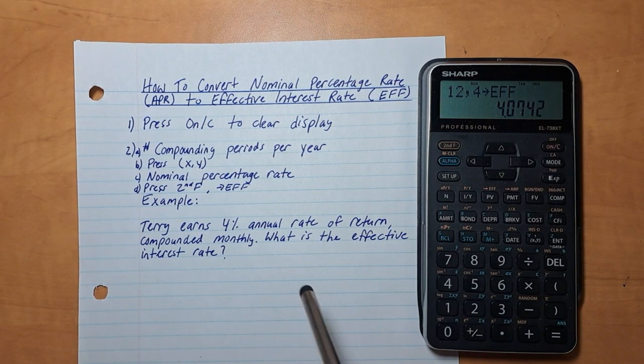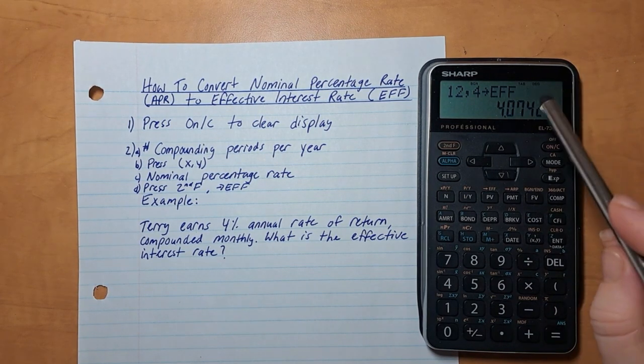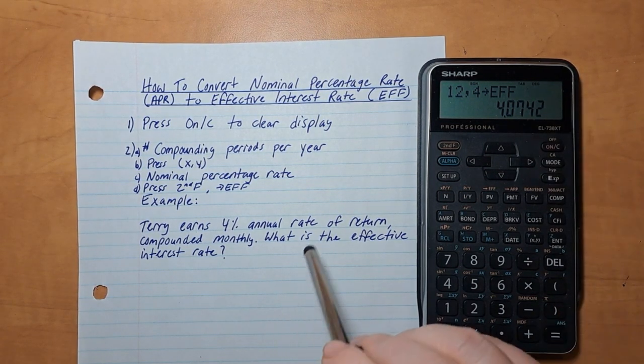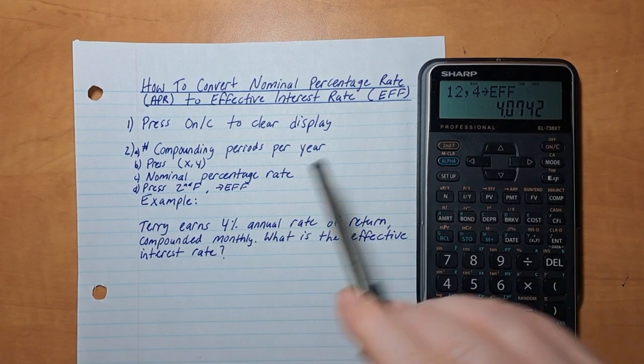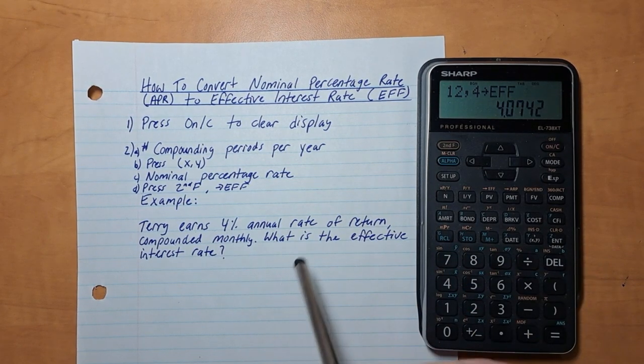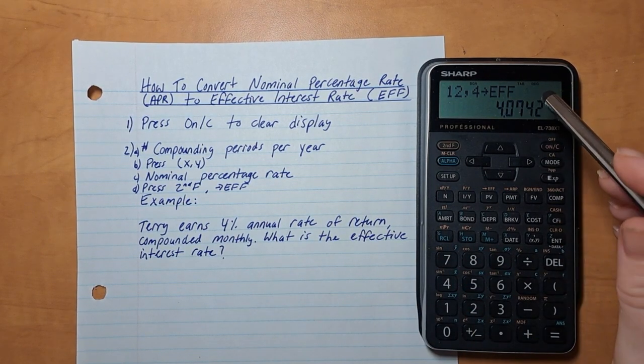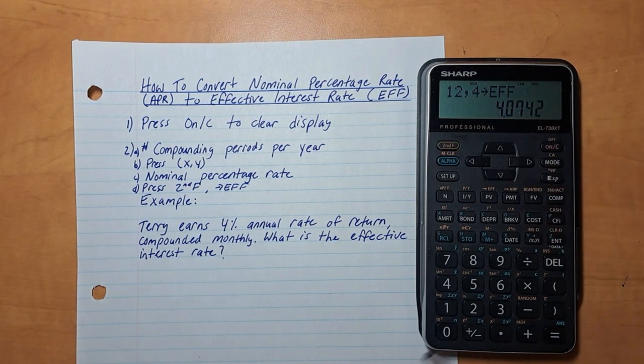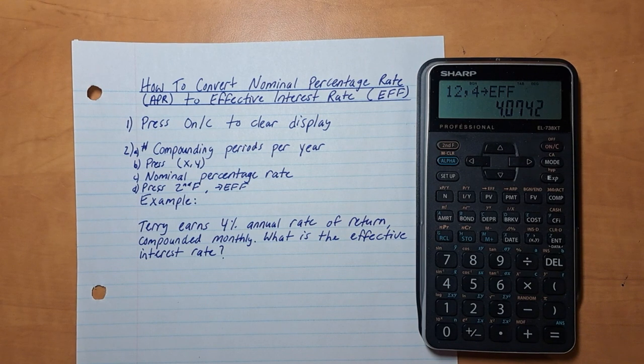And her effective interest rate is 4.0742, so you can see how it's a little bit different, a little bit more accurate than the 4% annual rate. When it is compounded monthly, that's her actual percentage when it's compounded monthly. So there you go, that's how you convert nominal percentage rate to effective interest rate.